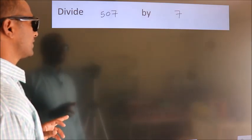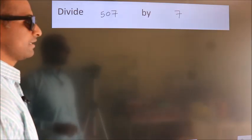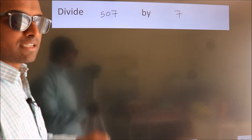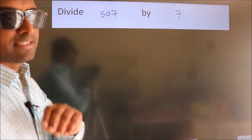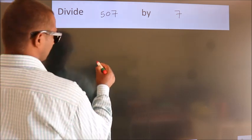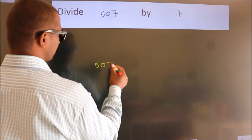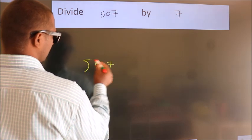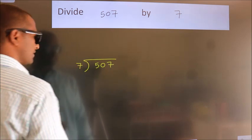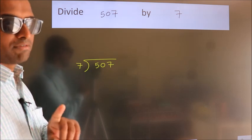Divide 507 by 7. To do this division, we should frame it in this way. 507 here, 7 here. This is your step 1.